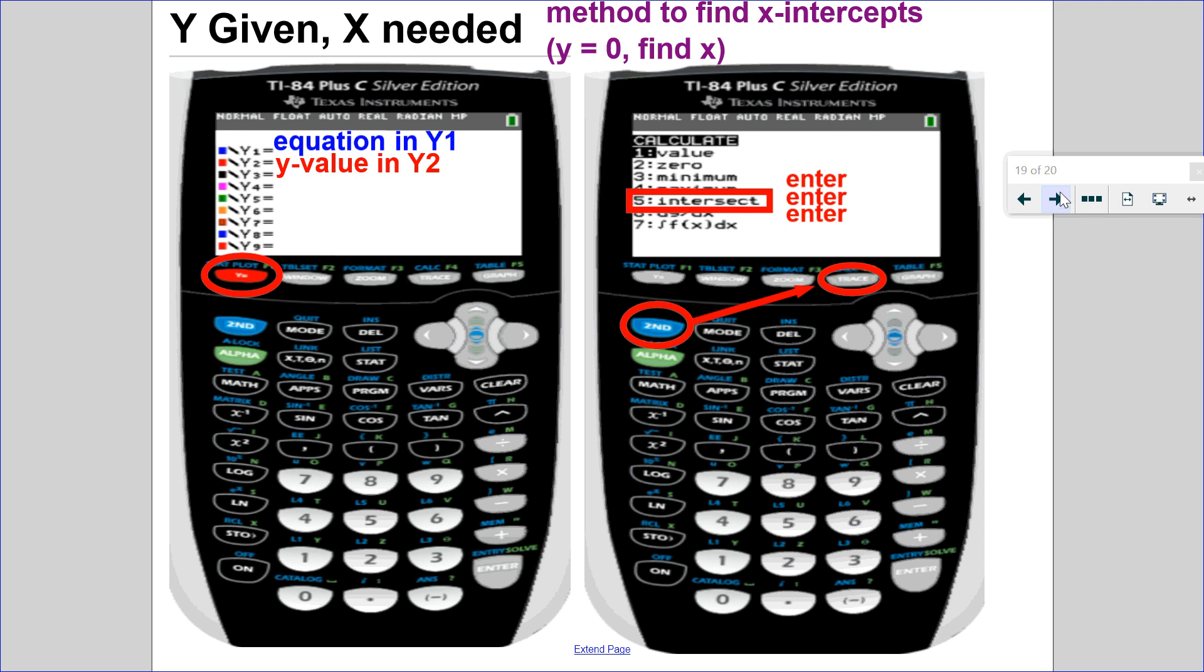Once I get that, I press enter three times. Once to bypass the first curve, a second time to bypass the second curve, and a third time to bypass the guess option.